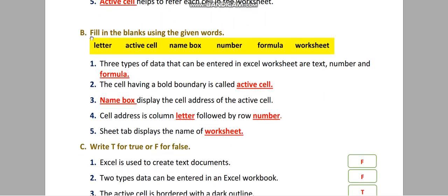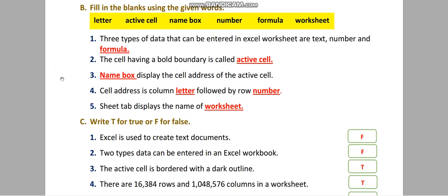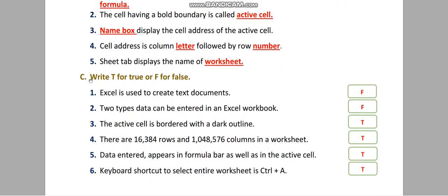Section B: Fill in the blanks using the given words. Complete. Section C: Write T for true and F for false.